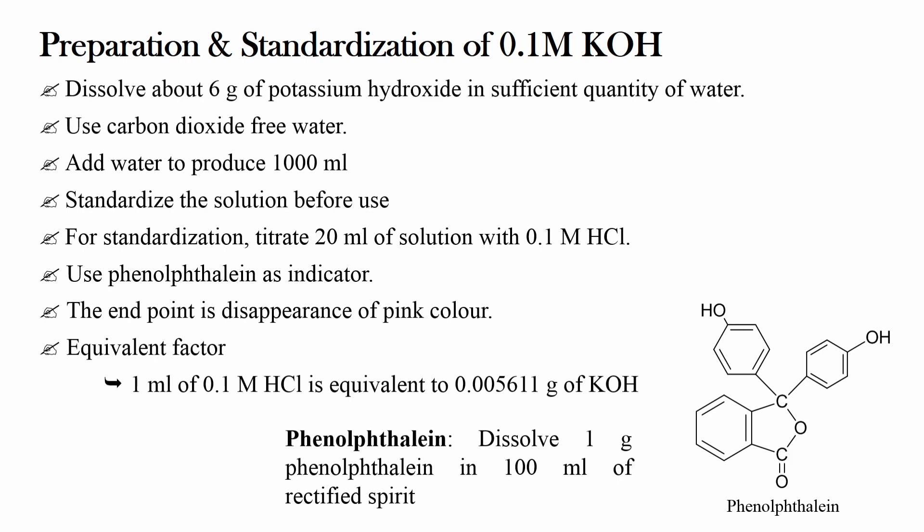Now coming to phenolphthalein solution. Dissolve 1 g of phenolphthalein in 100 ml of rectified spirit.